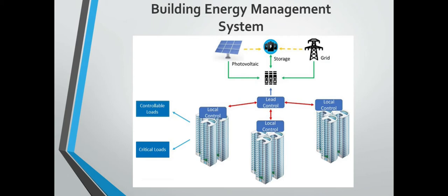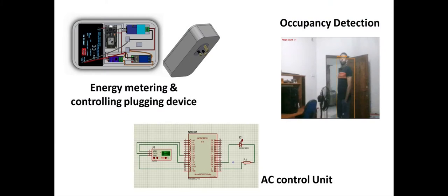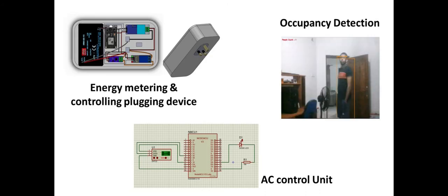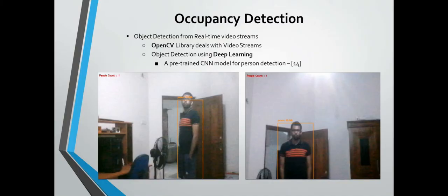Our system consists of three main units: AC control unit, energy metering and controlling plug-in device, and occupancy detecting system. Occupant count inside the room is obtained using pre-trained CNN model by video streams.